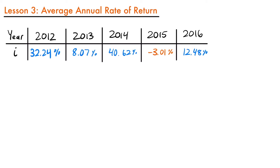It's fairly simple in concept and best demonstrated with an example using this chart. A good real-world example of the average annual rate of return would be looking at annual return rates for a particular stock. We'll look at the Apple stock rates over the years from 2012 to 2016. I'll include the source in the description. What we're going to do is take these five years and find an average rate over that period.